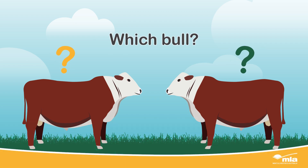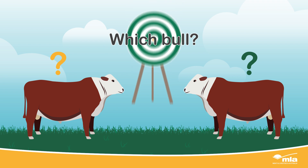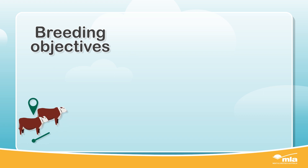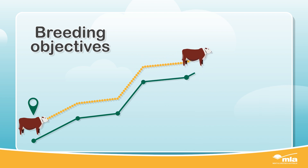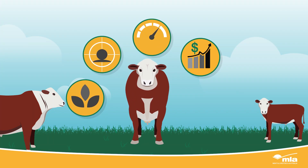Which bull will be the best match for your breeding objectives? Breeding objectives describe your future production goals. It's only when you know where you want to go with your herd that you can choose the bull with the right genetics to help take you there.